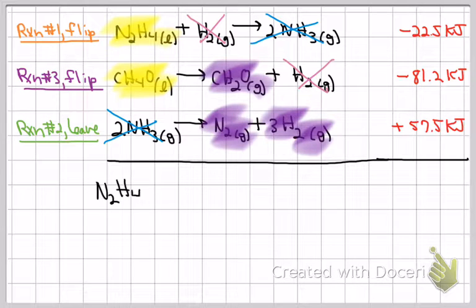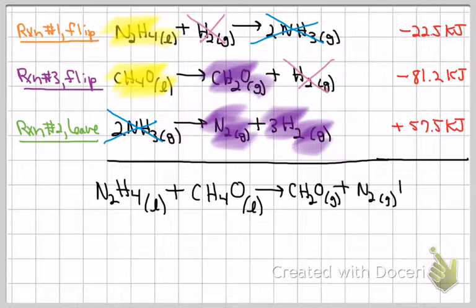So I bring them down, leaving them in their original positions. There are my two reactants. And here are my three products. It matches identically my target.